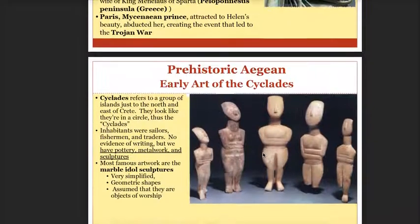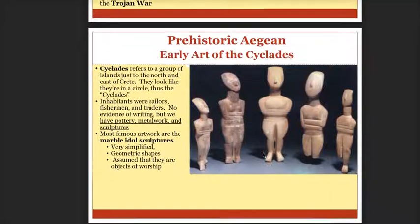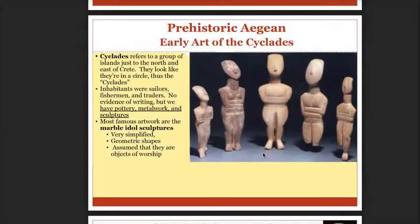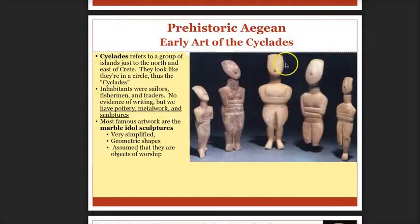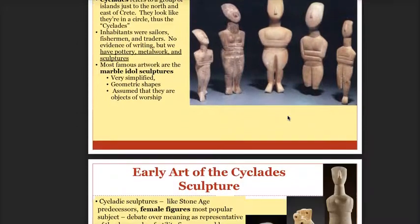As far as the Cycladic art goes, we will see they left a lot of these smaller ivory idols, and most of them look very much like female figures. They have breasts, their arms are folded on their chest, and they have nondescript faces — almost like alien kind of faces. That's the Cycladic art.